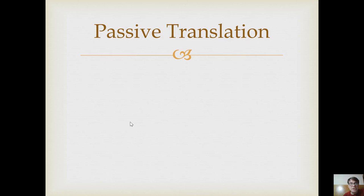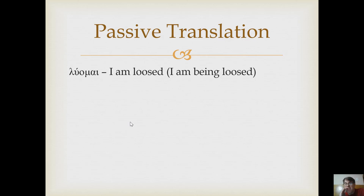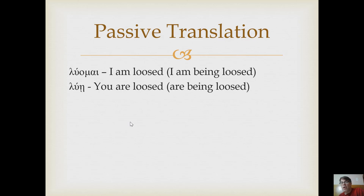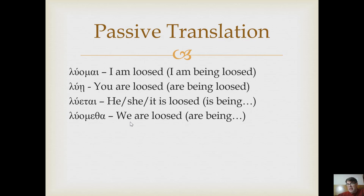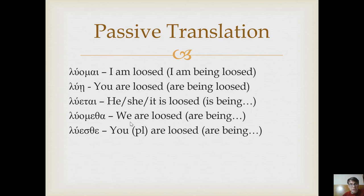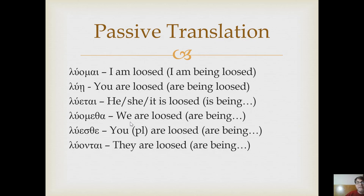What is the translation of the passive? 'I am loosed,' or preferably 'I am being loosed' to get that continuous flavor. You are loosed/being loosed. He, she, or it is loosed/being loosed. We are loosed/being loosed. Y'all are loosed/being loosed. They are loosed/being loosed. We now have our second set of verb endings.